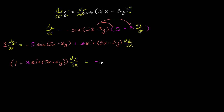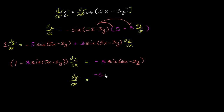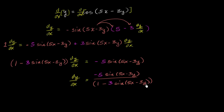On the right-hand side we're just left with negative 5 sine of 5x minus 3y. And we're in the home stretch now. To solve for dy/dx, we just divide both sides by that factor. We are left with dy/dx is equal to negative 5 times sine of 5x minus 3y, all over 1 minus 3 sine of 5x minus 3y. And we are done.